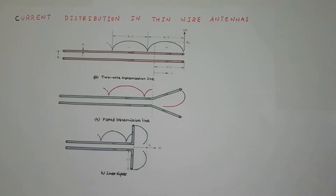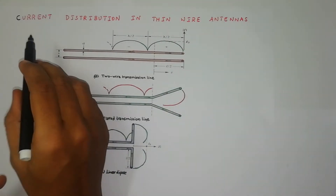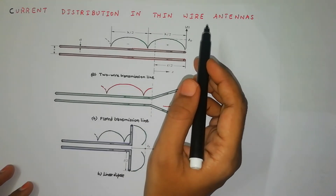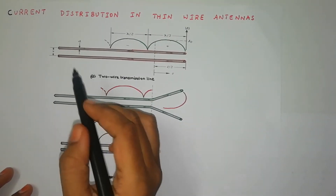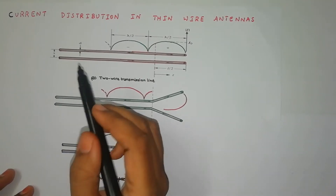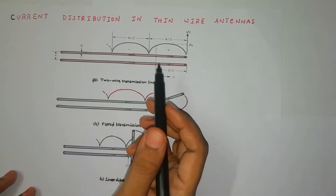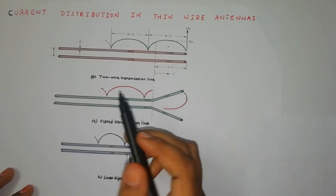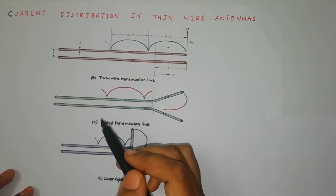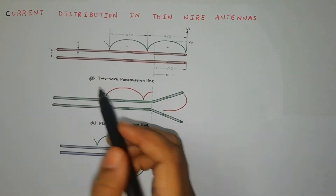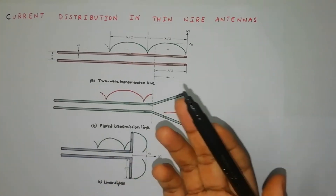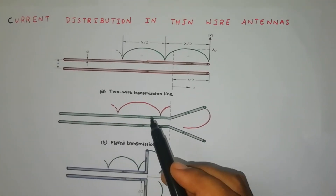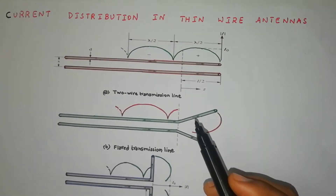In today's class we are going to discuss the concept of current distribution in thin wire antennas. As in previous classes we were discussing about how the radiation mechanism occurs in single wire, two wire, as well as dipole. This is an extension to that concept. What we are going to find out is if we take a conductor — an antenna — how the current will actually be distributed.